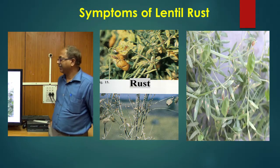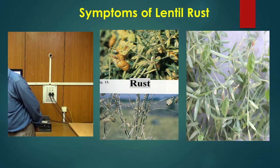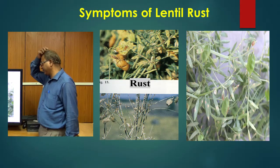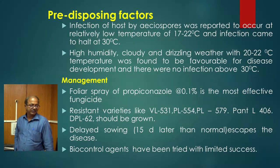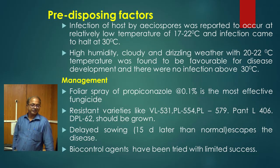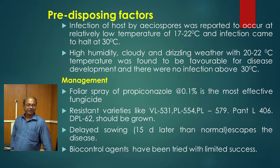You can identify the uredospore, teliospore, and basidiospore of the rust. This is a symptomatic view of lentil crop showing rust disease. Infection of the host was reported to occur at relatively low temperatures of 10 to 22 degrees centigrade, and infection ceased at 30 degrees centigrade. High humidity, cloudy weather with drizzling, and 20 to 22 degrees centigrade temperature were favorable for disease development. There was no infection above 30 degrees centigrade.